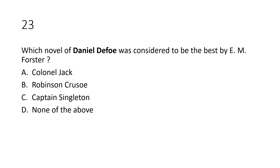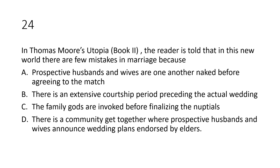Question number twenty-three: Which novel of Daniel Defoe was considered the best by E.M. Forster? Question number twenty-four: In Thomas More's Utopia Book 2, the reader is told that there are few mistakes in marriage because: A, prospective husbands and wives see one another naked before agreeing to the match; B, there is an extensive courtship period preceding the actual wedding; C, the family elders are invoked before finalizing the new deal; D, there is a community gathering where prospective husbands and wives announce wedding plans endorsed by elders.